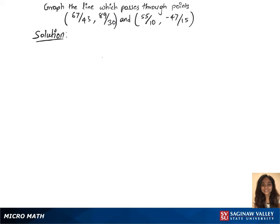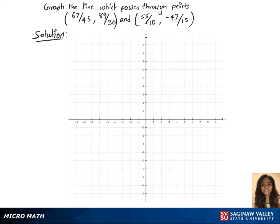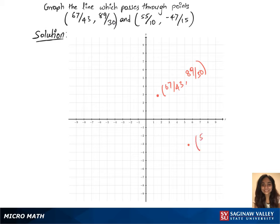To graph the line which passes through these points, we'll need a graph first. Let's look for the first point, which is 67 over 43 and 89 over 30, which is there. The other point, which is 55 over 10 comma minus 47 over 15, is going to be here — close to here. Let's mark that.